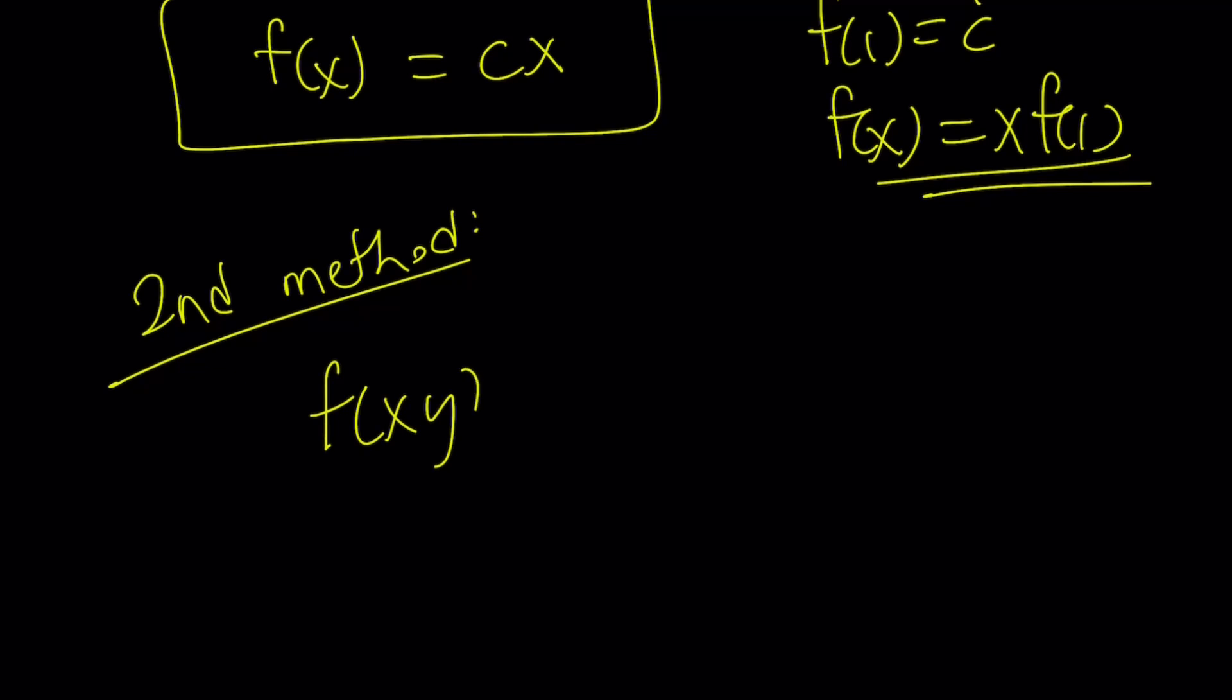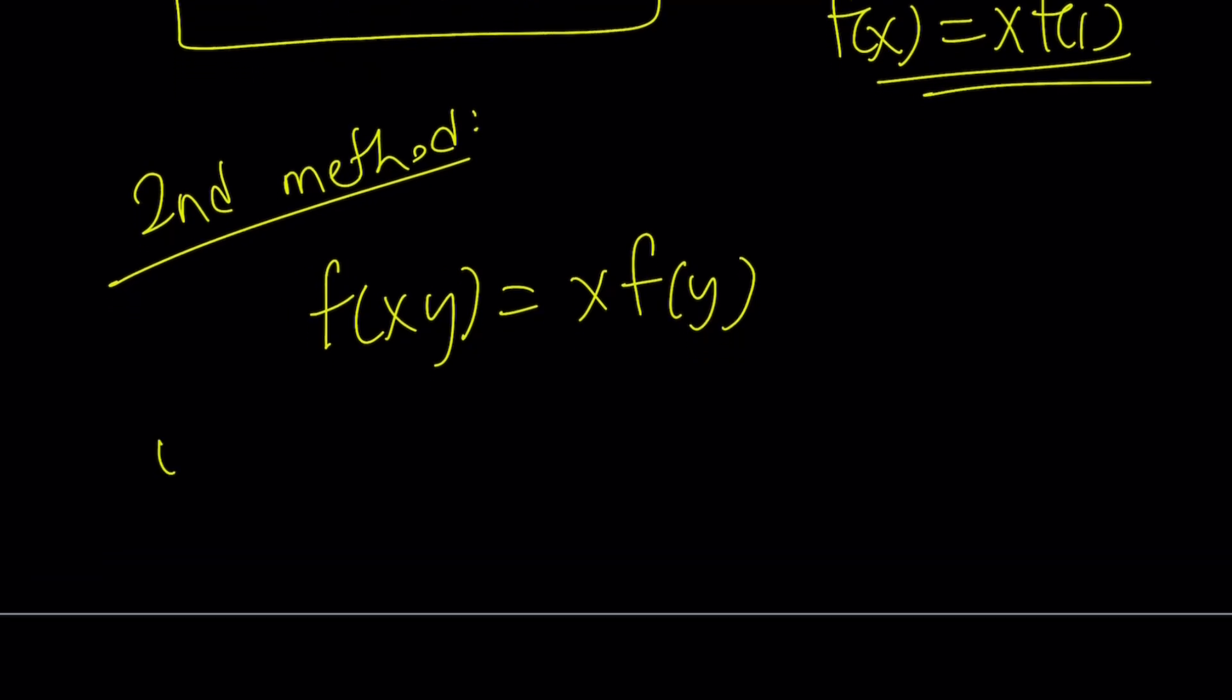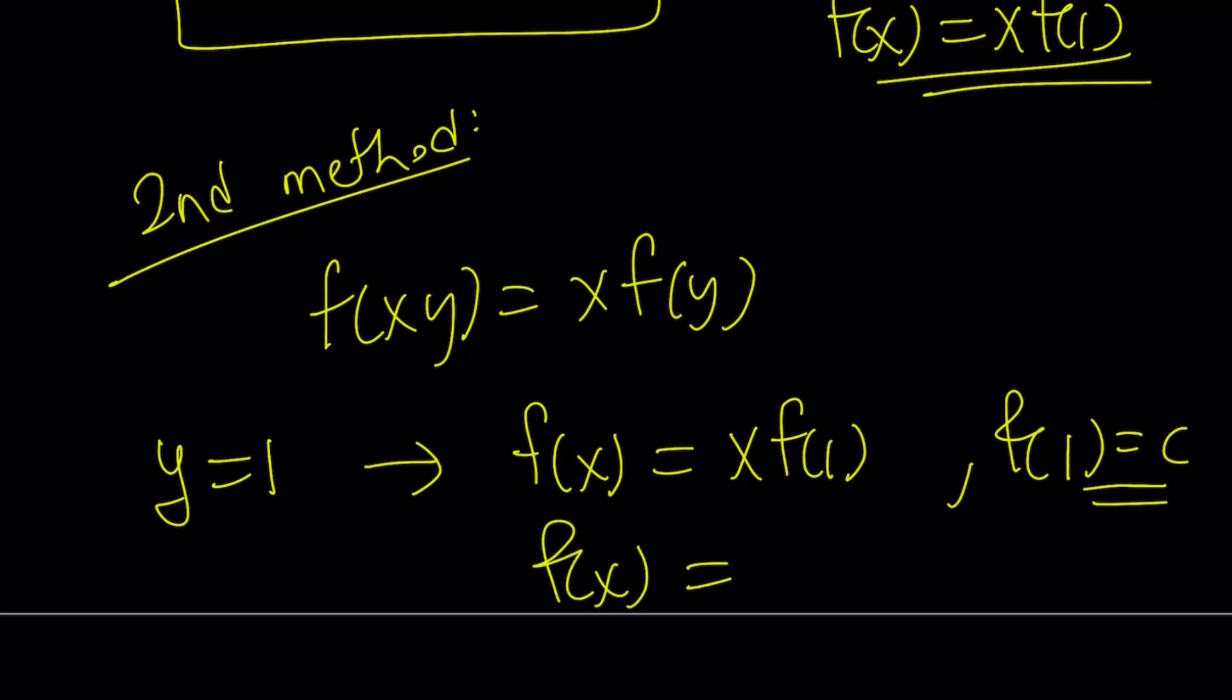f of xy equals x f of y. Even though I said it's a short video, I know some people are going to say, like, hey, you can do this in 30 seconds. Okay, fine. Now, replace y with 1 and see what happens. This is really cool. If you replace y with 1 in the original equation, you get f of x equals x times f of 1. And if you set f of 1 equals c, you get f of x equals cx.